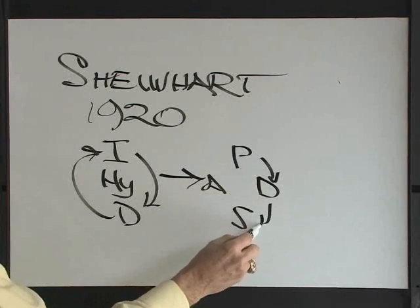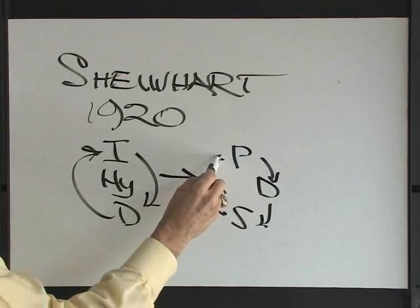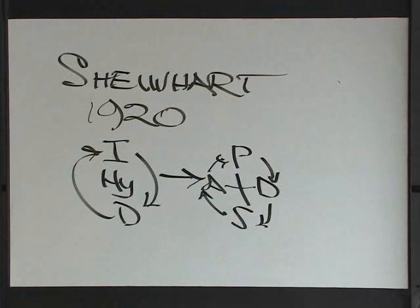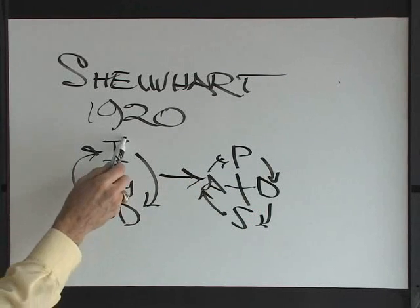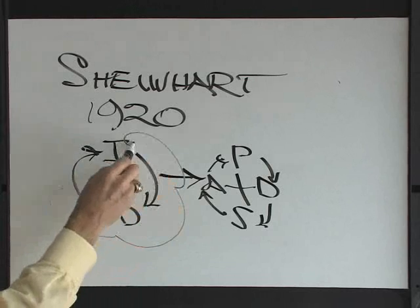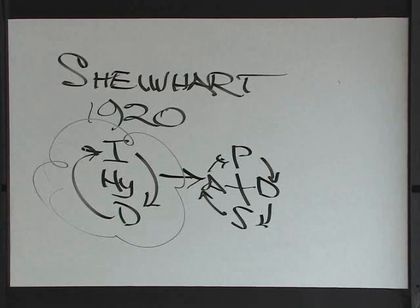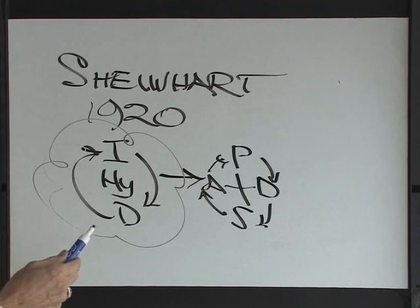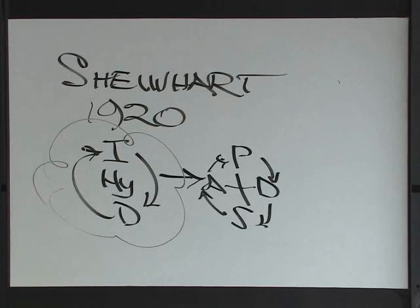Now remember, Shewhart and his students, Deming and Duran, were working on the shop floor at Western Electric. They could not, as PhDs trained in physics, engineering, statistics, take the academic scientific method and apply it to shop floor where people were working, making old-fashioned telephones.